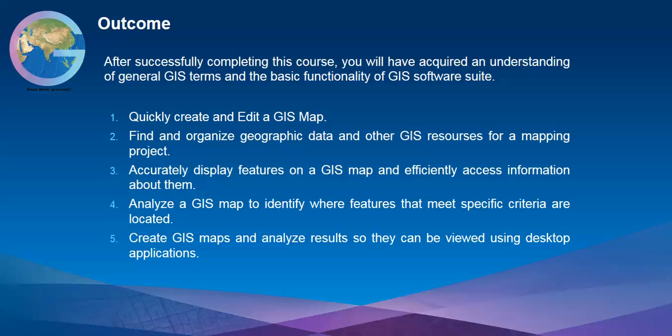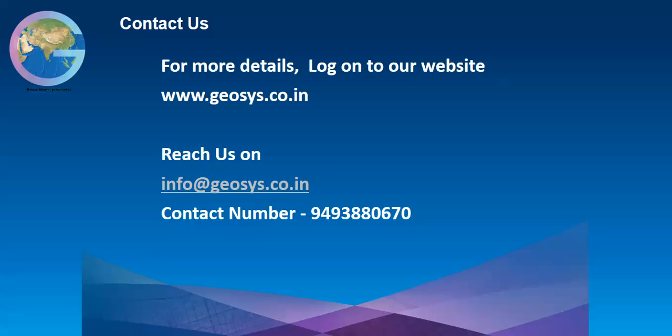What are the outcomes you are going to learn as a part of this course? You will be creating various maps and you will know how to edit your maps, how to organize your data systematically, how to display your feature data and attribute data, how to prepare various kinds of base maps, how to symbolize your data, how to give labeling for your features, how to analyze your data, and how to perform various spatial analysis and geoprocessing analysis. That is all you will be learning as a part of this course.